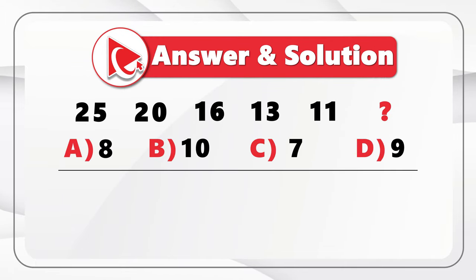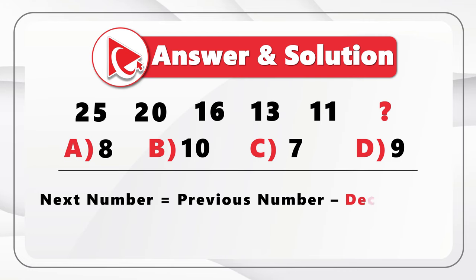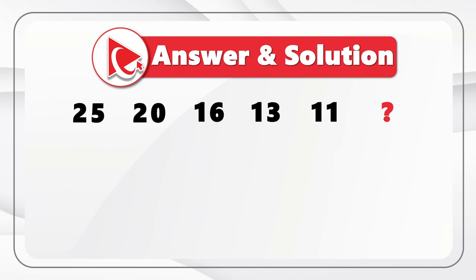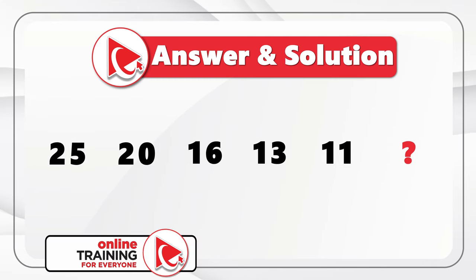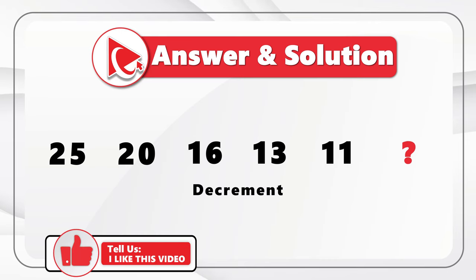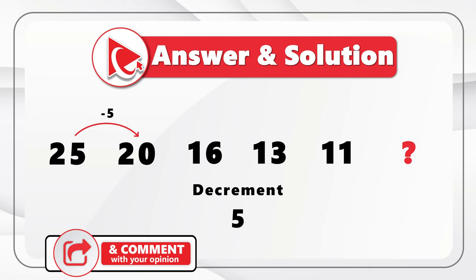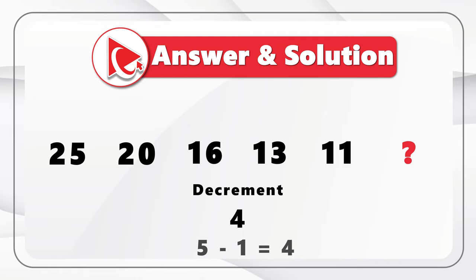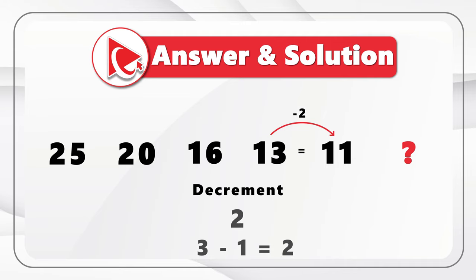Here we have a concept of decrement. The pattern is that the next number is calculated as the previous number minus the decrement, and the decrement increases by one with each number in the sequence. Our first number is 25 and the initial decrement is minus 5. So: 25 minus 5 equals 20, then decrement becomes minus 4, giving 20 minus 4 equals 16. Then 16 minus 3 equals 13, 13 minus 2 equals 11, and 11 minus 1 equals 10.